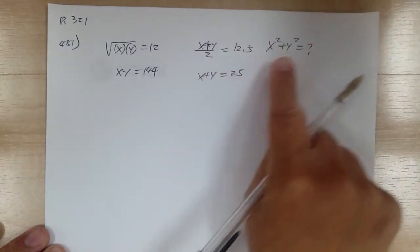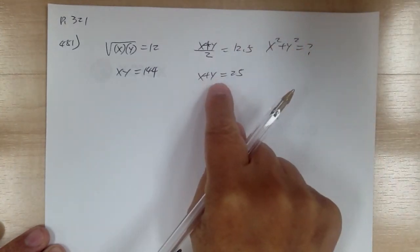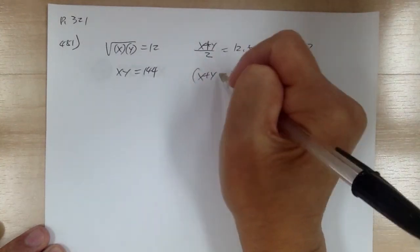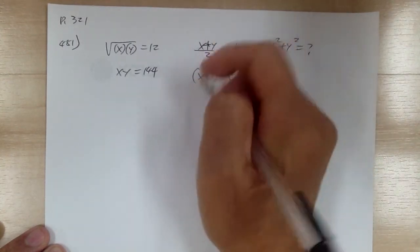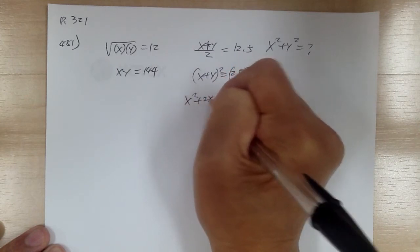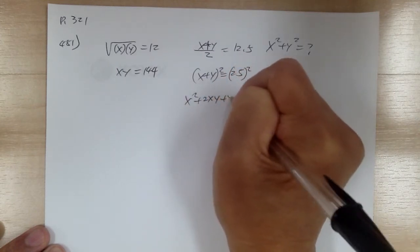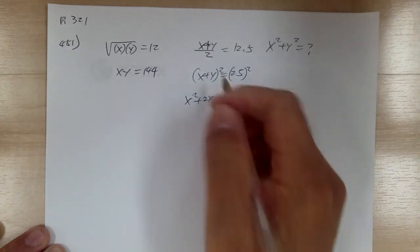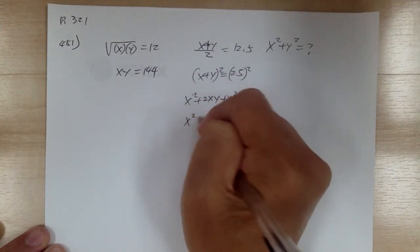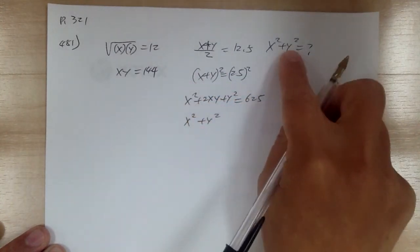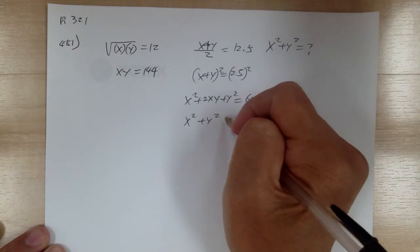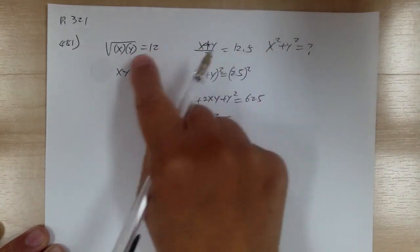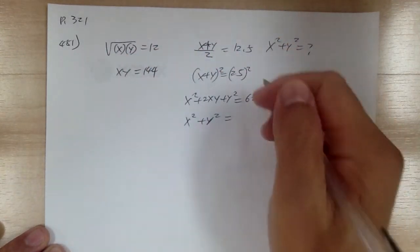Then what you want to do is square both sides of x plus y equals 25. So you get x squared plus 2xy plus y squared equal to 625. Then you move the 2xy over. Don't waste your time solving for individual values because it can get very messy.